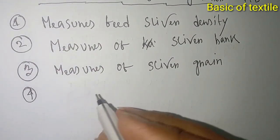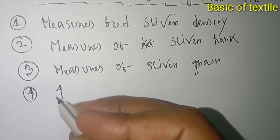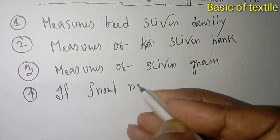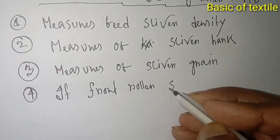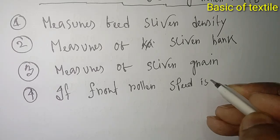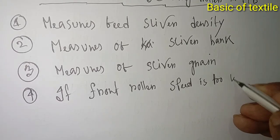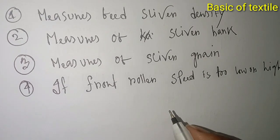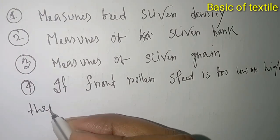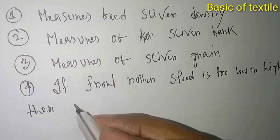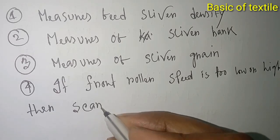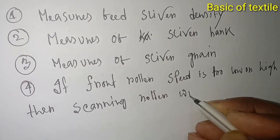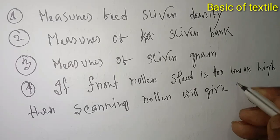Number four: if front ruler speed is too low or high, then the scanning ruler will give a signal.